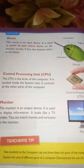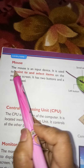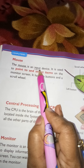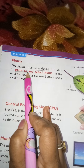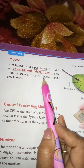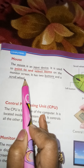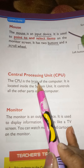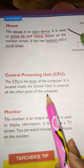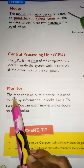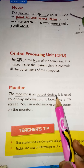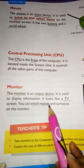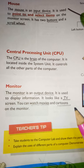Now underline some important words. First, underline 'mouse,' then 'input device,' 'point to,' 'select items,' 'buttons,' and 'scroll wheel.' For CPU, underline 'brain.' For monitor, underline 'output device,' 'TV,' 'watch movies,' and 'cartoons.'